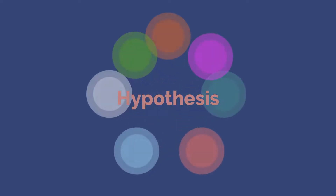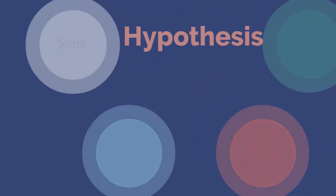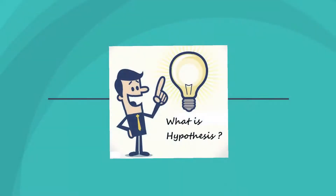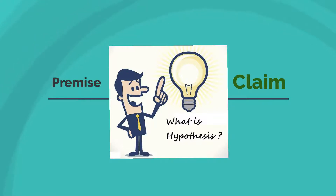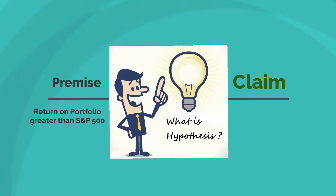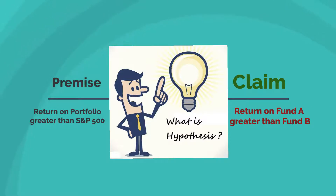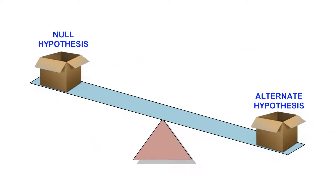Hypothesis testing can be broken down into seven steps. In step one, we start the process by stating the hypotheses. A hypothesis is a premise or a claim that we want to test or investigate. For example, we can test the claims made by a portfolio manager that her portfolio generates higher return than the S&P 500 index, or we can test if mutual fund A generates higher returns than mutual fund B. Once we state our research questions, in the first step we come up with two hypotheses: the null hypothesis and the alternate hypothesis.